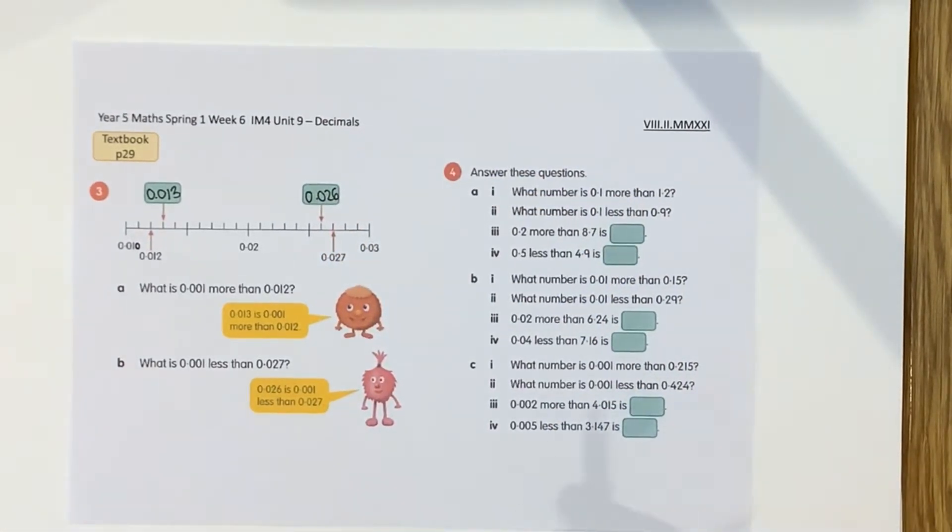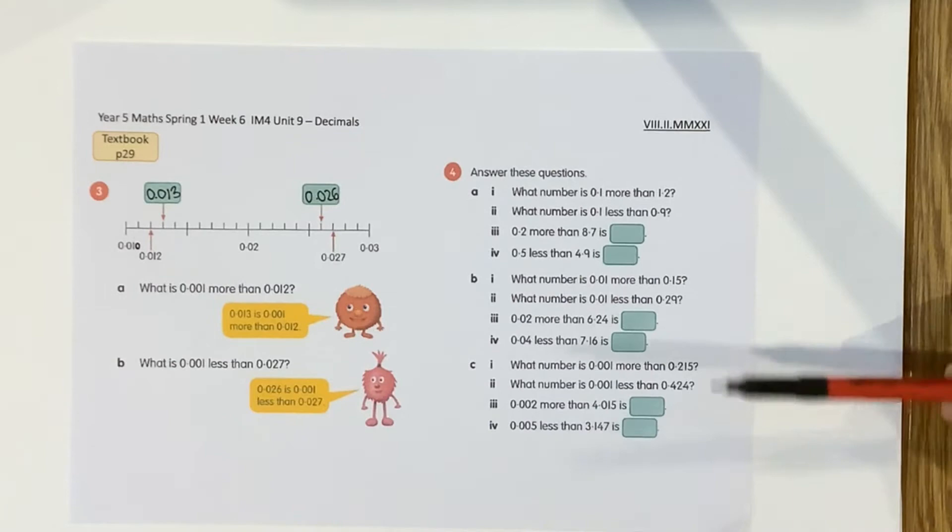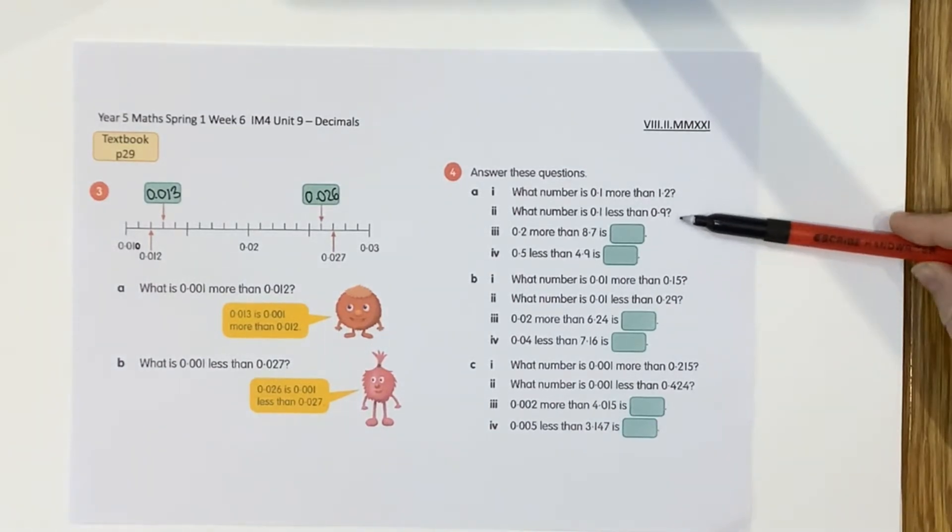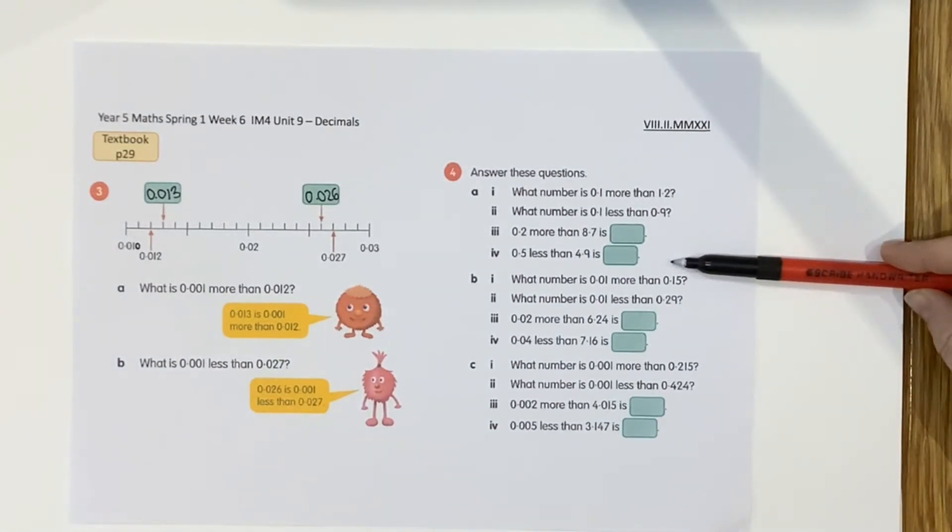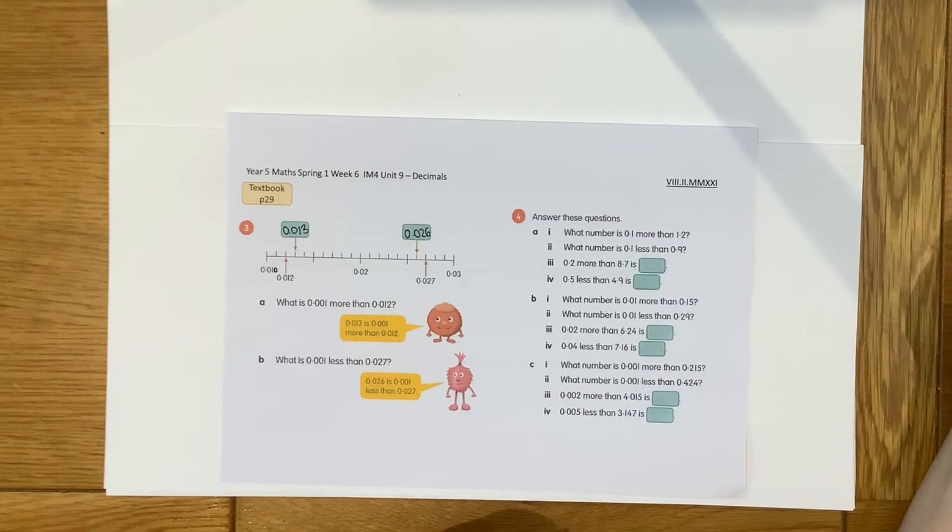Okay, number four then, if you're happy with using a number line for comparing decimals, you can pause the screen here and then work through number four, and then come back for your answers. If you're still unsure, if you leave the video rolling, I'll show you how you can use a place value grid to help you to work out the answers, and then when you're ready, you can pause and try the rest before coming back for the answers.